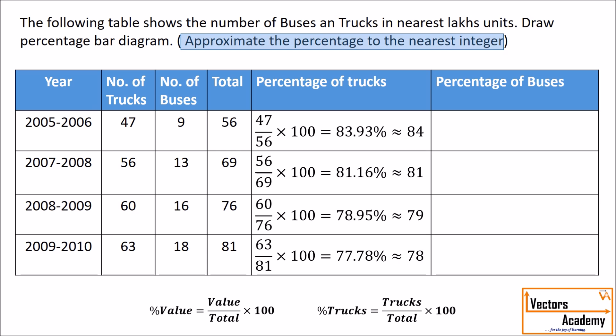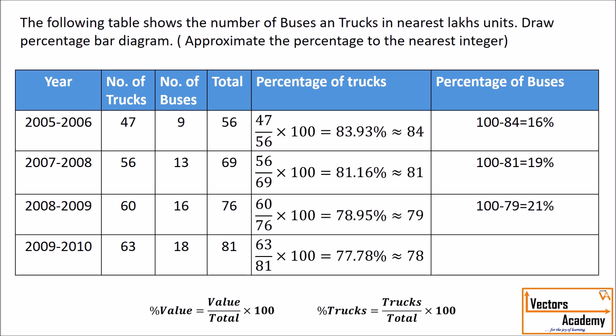Once you have done with the calculation of percentage of trucks, we can now move on to percentage of buses. The total percentage amounts to 100. So the percentage of buses will be 100 minus the percentage of trucks. So 100 minus 84 will give you 16. Similarly, for the other years, we just need to subtract the percentage of trucks from 100.